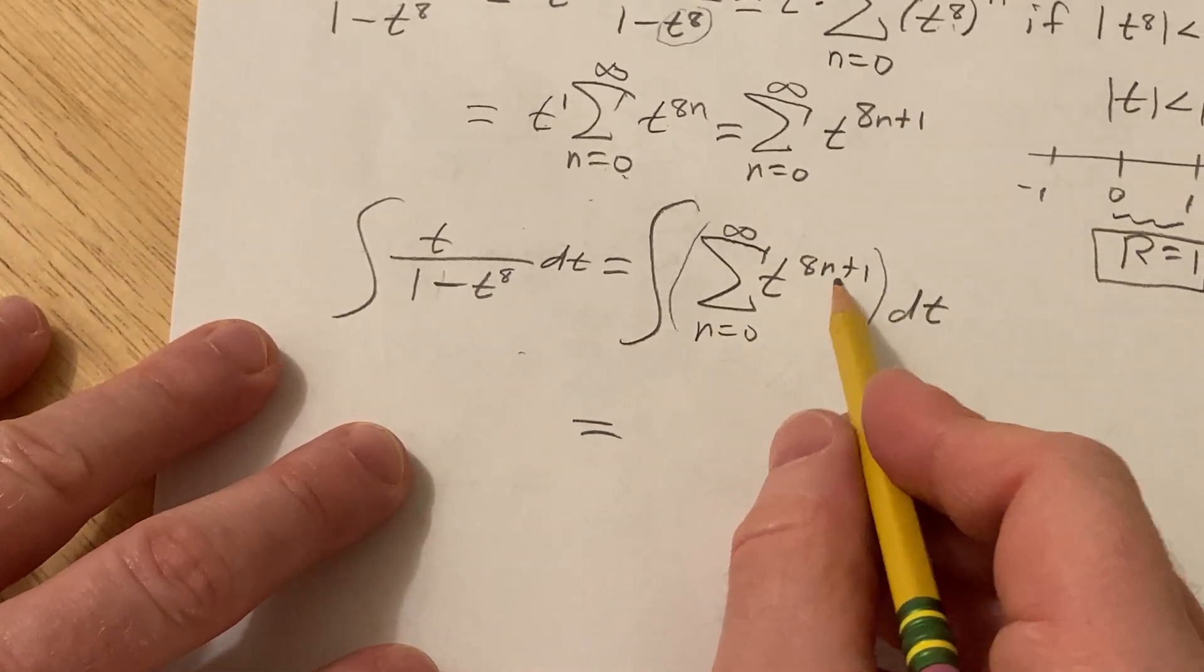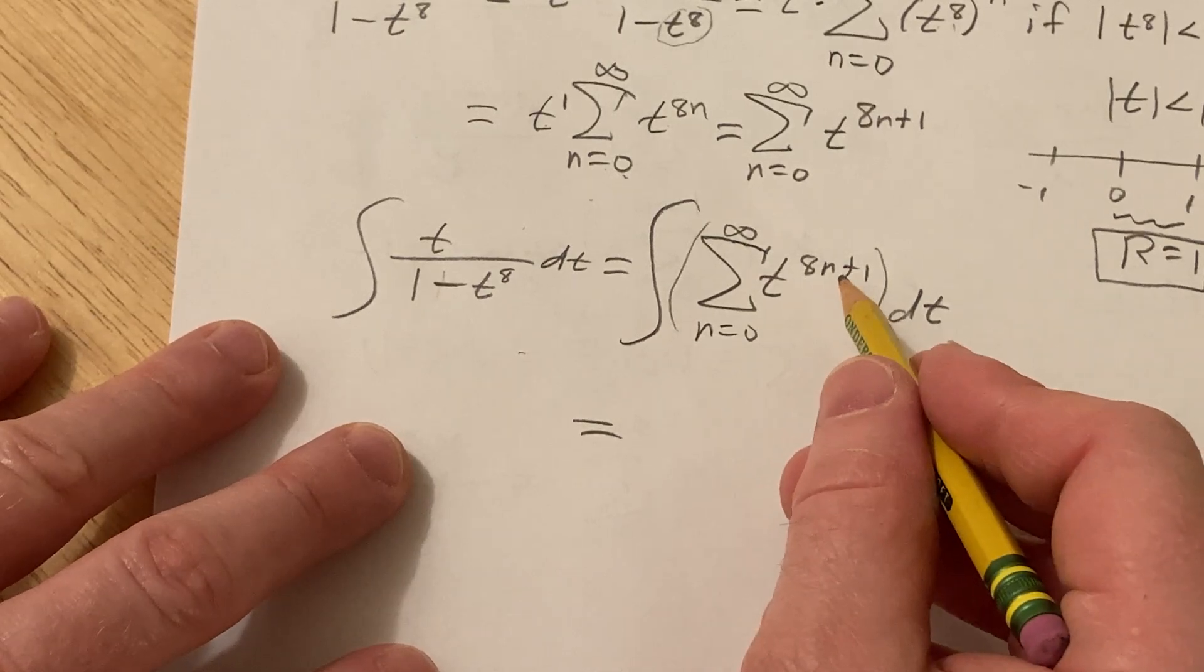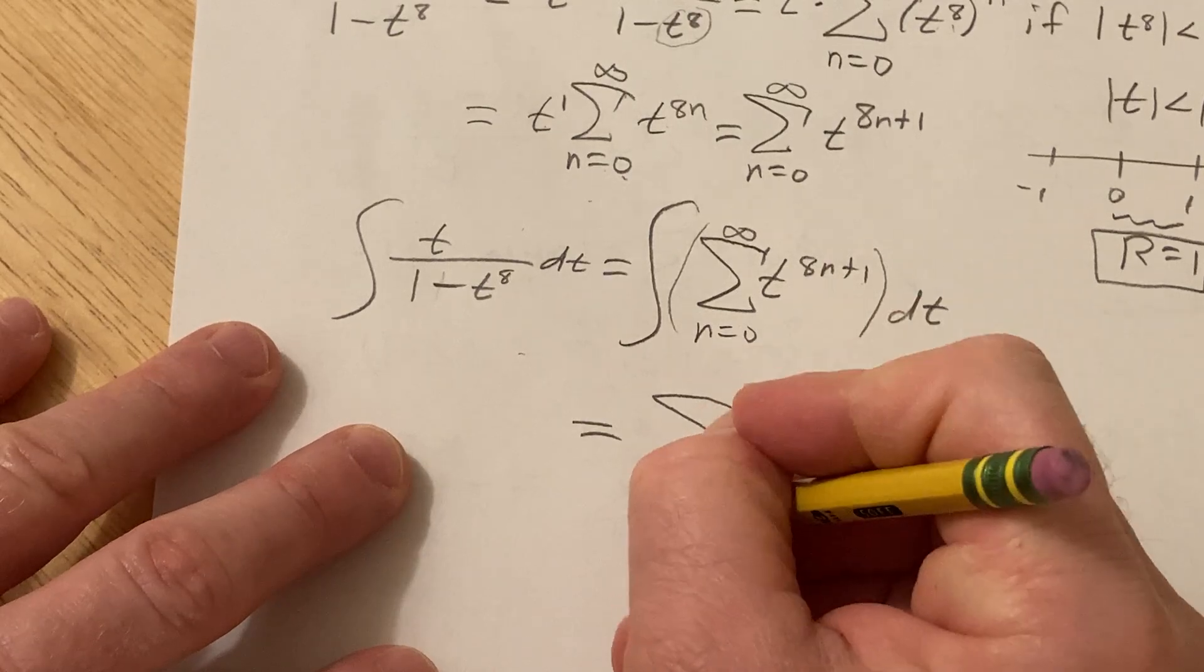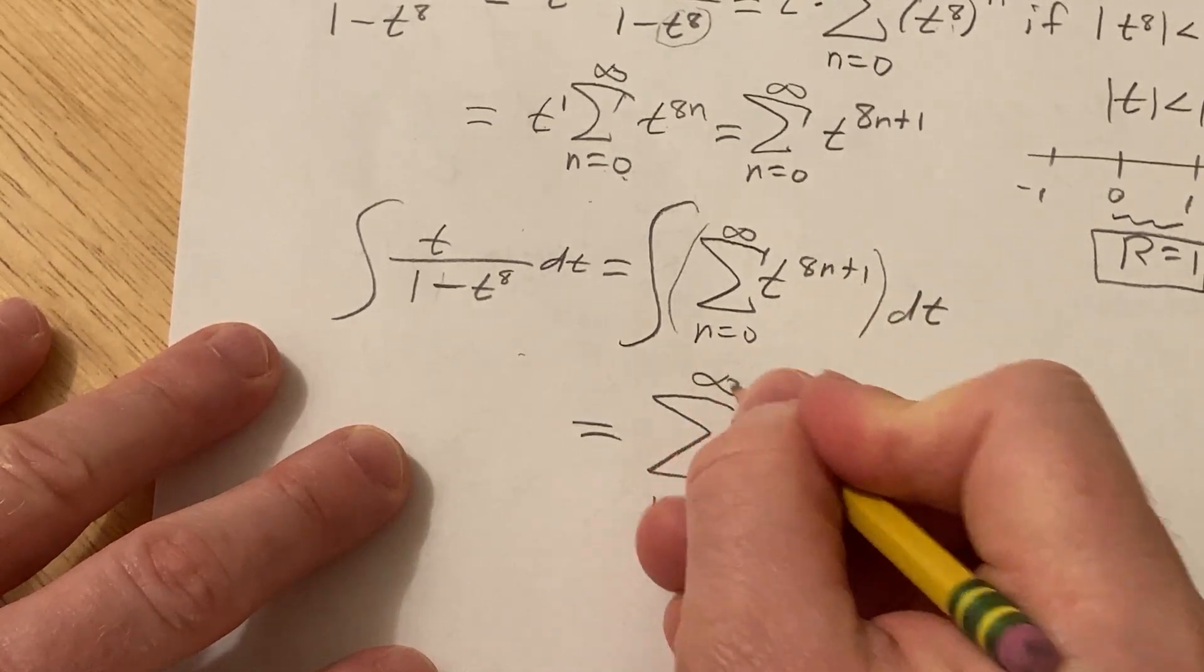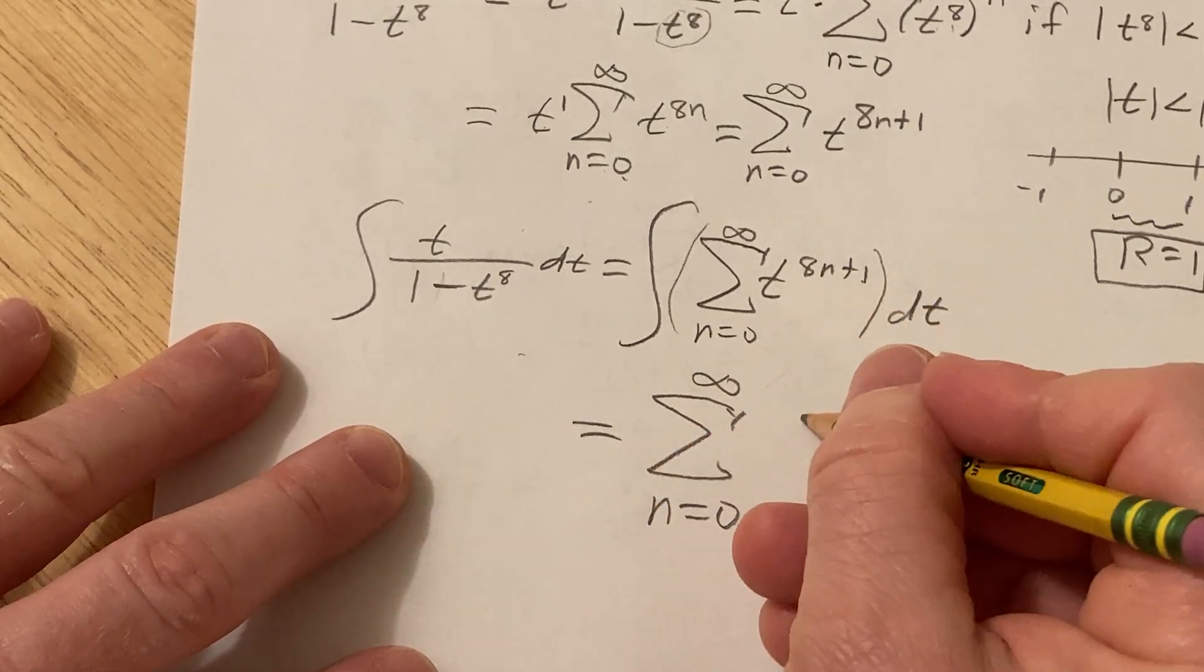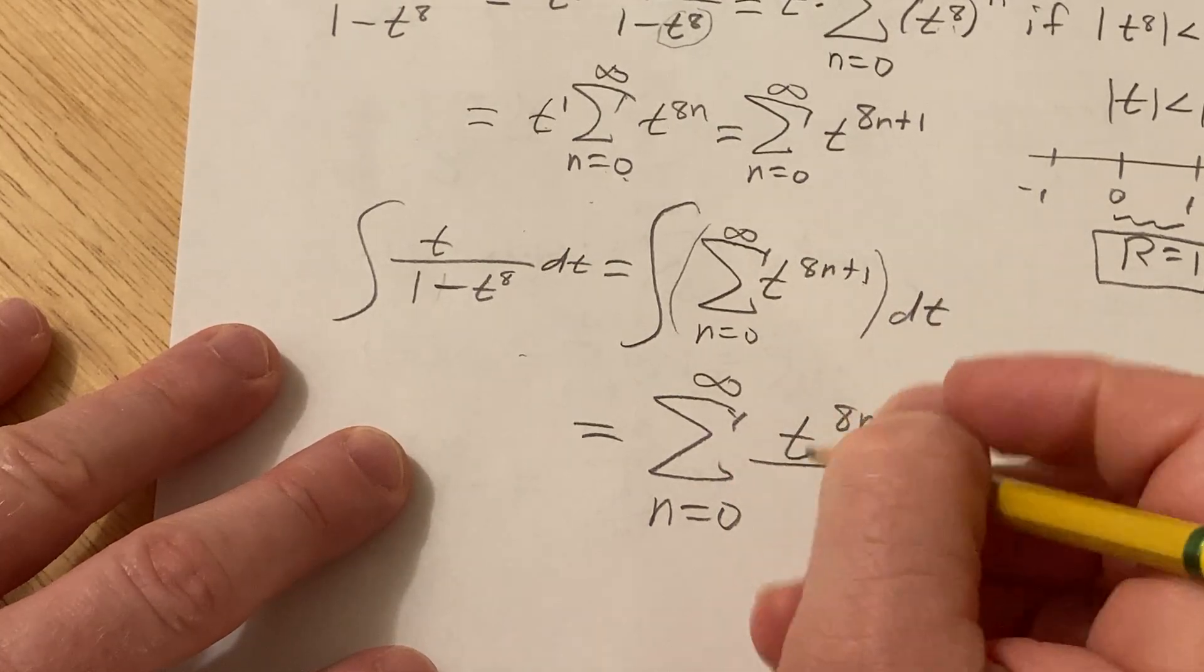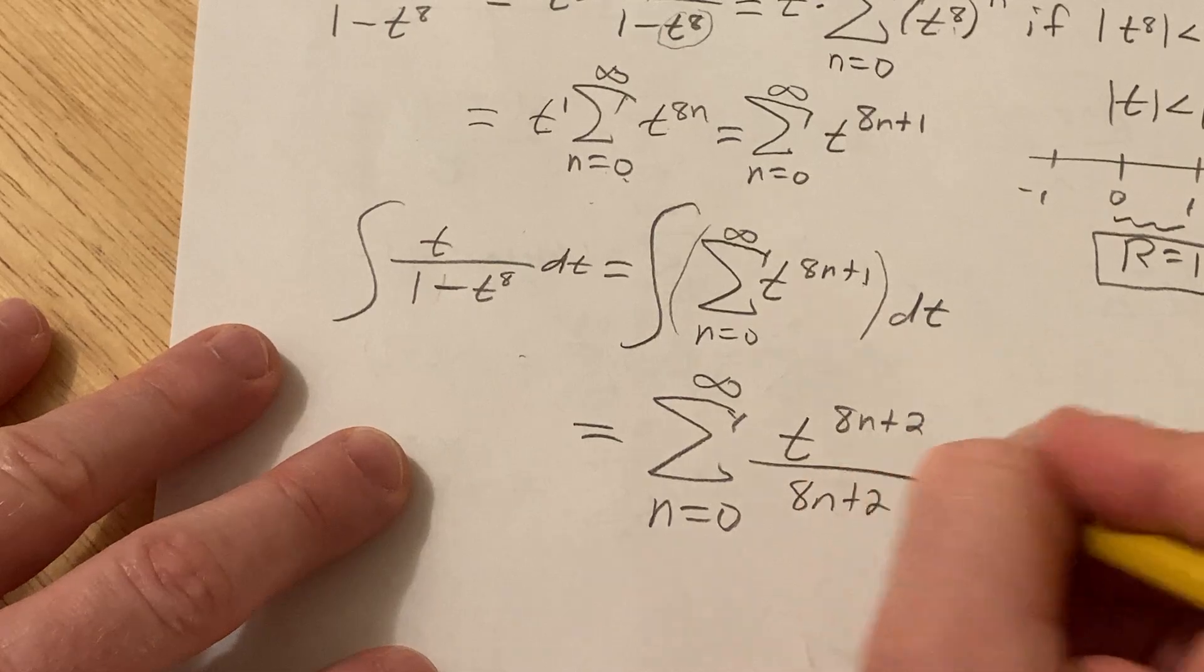So then you just basically integrate each one term by term, so you just use the power rule. You just add one to the exponent, so this is going to be the infinite sum as n runs from zero to infinity, you add one so it'll be t to the eight n plus two over eight n plus two, plus our constant of integration capital C.